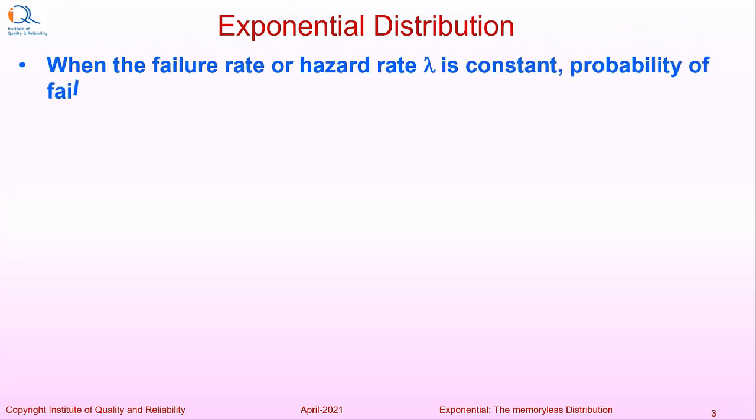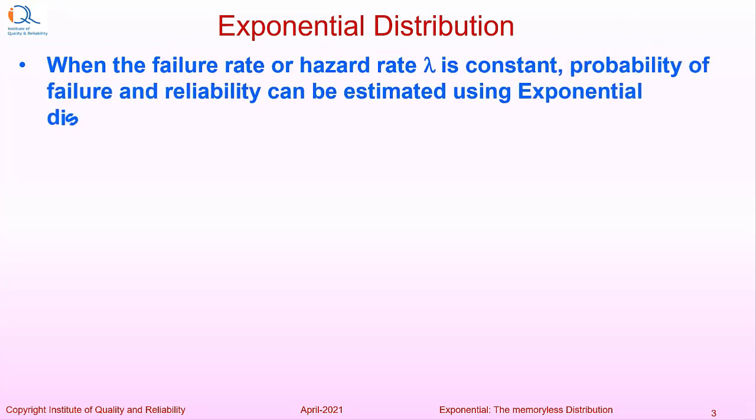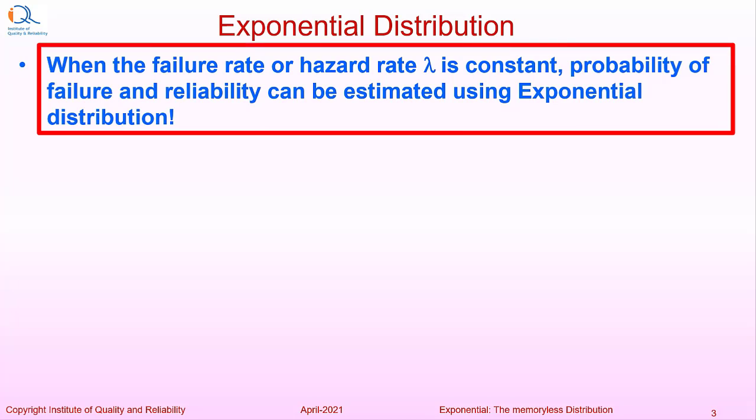When the failure rate or hazard rate lambda is constant, probability of failure and reliability can be estimated using exponential distribution.